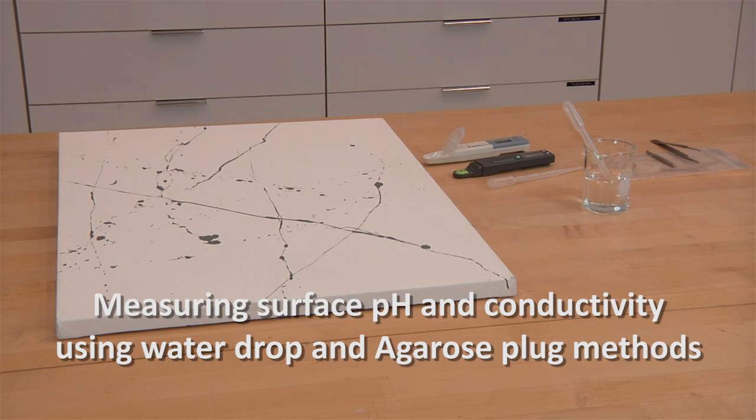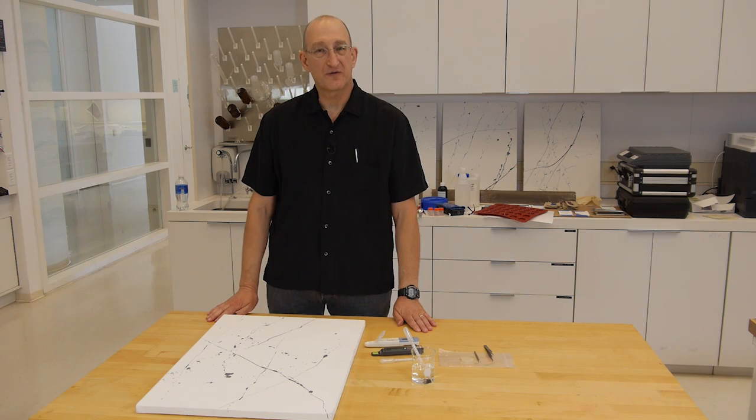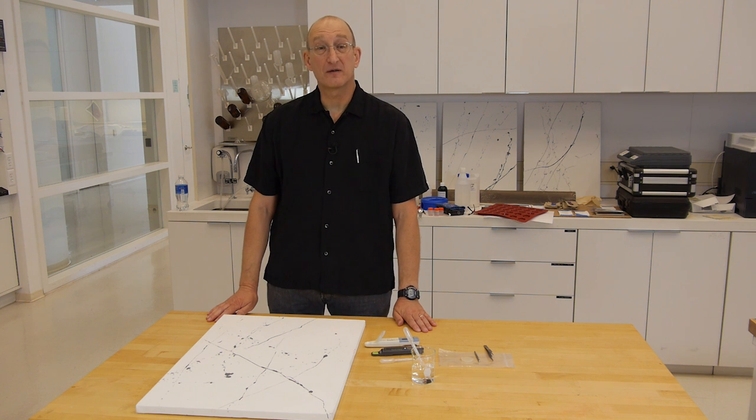We're going to measure the surface conductivity and pH of the sample painting in two different ways. The first, we're going to use a drop of water, which is the less good way, but more straightforward conceptually.